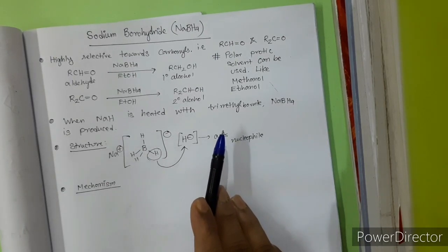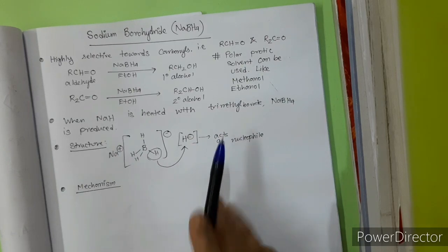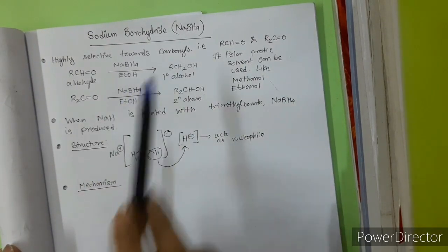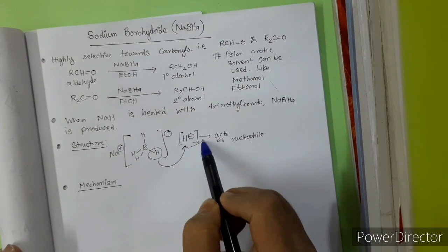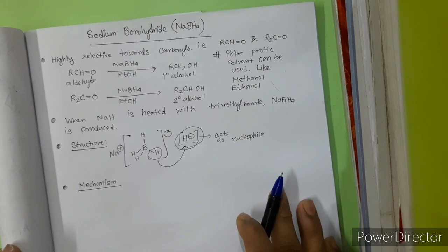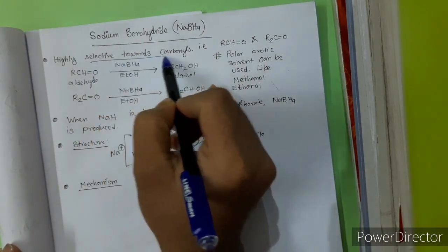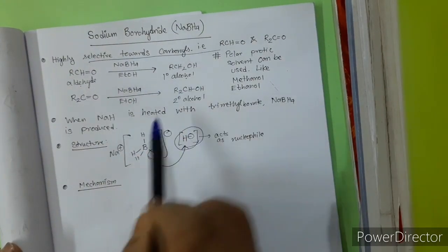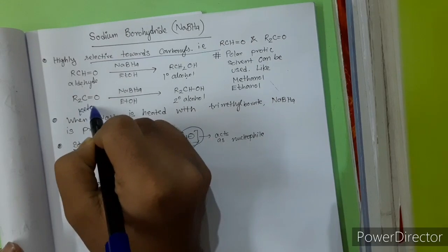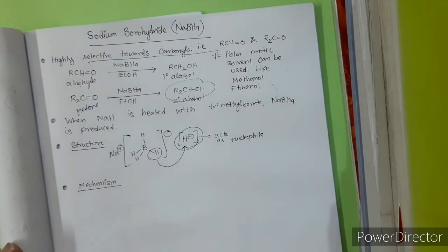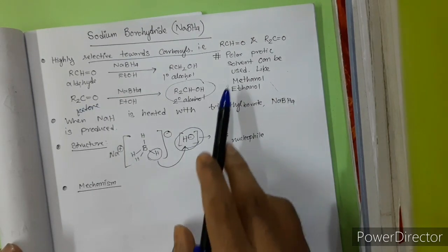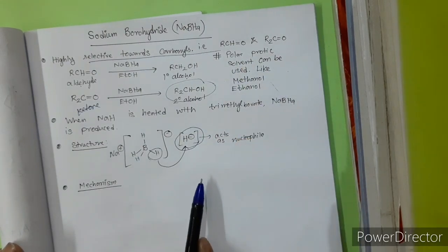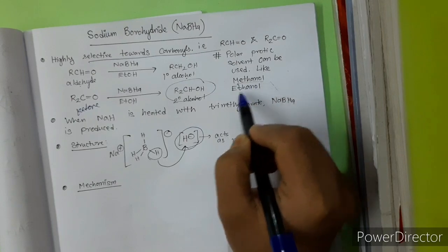I have covered important concepts about stereoselectivity in those cases. Sodium borohydride is a hydride source — a potent hydride source just like LiAlH4 — but it is highly selective towards carbonyl. That means if a carbonyl and any other functional group are present, it will selectively reduce the carbonyl. From an aldehyde I am getting a primary alcohol, and from a ketone I am getting a secondary alcohol. NaBH4 is much less reactive compared to lithium aluminum hydride, and for this reason polar protic solvents like methanol, ethanol, or even water can be used.